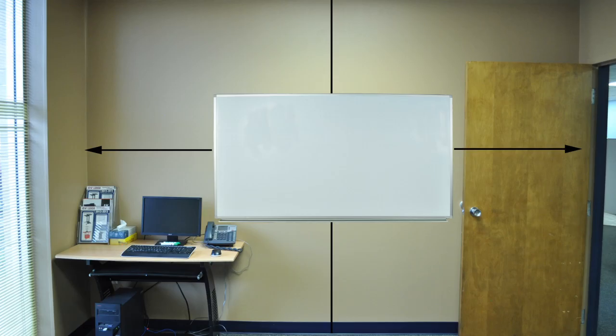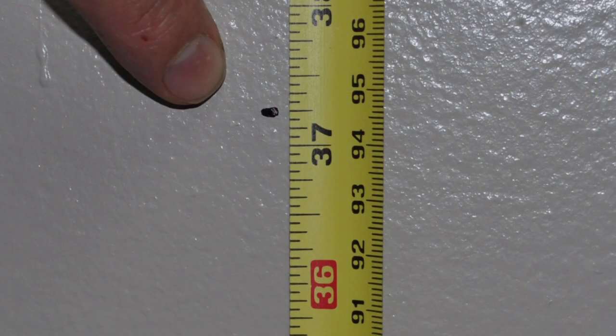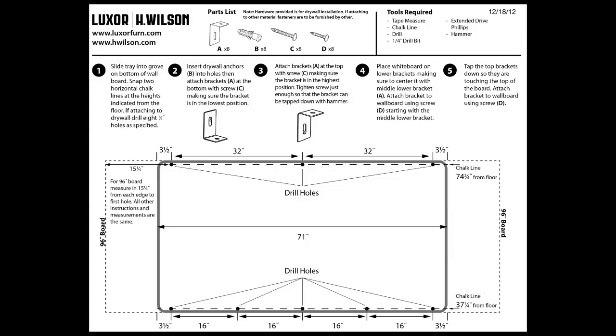To determine the general location that you'd like to install your whiteboard, you'll be snapping two horizontal chalk lines at the heights as indicated on the drawing. Please consult your installation instructions for the proper height from the floor to each chalk line.